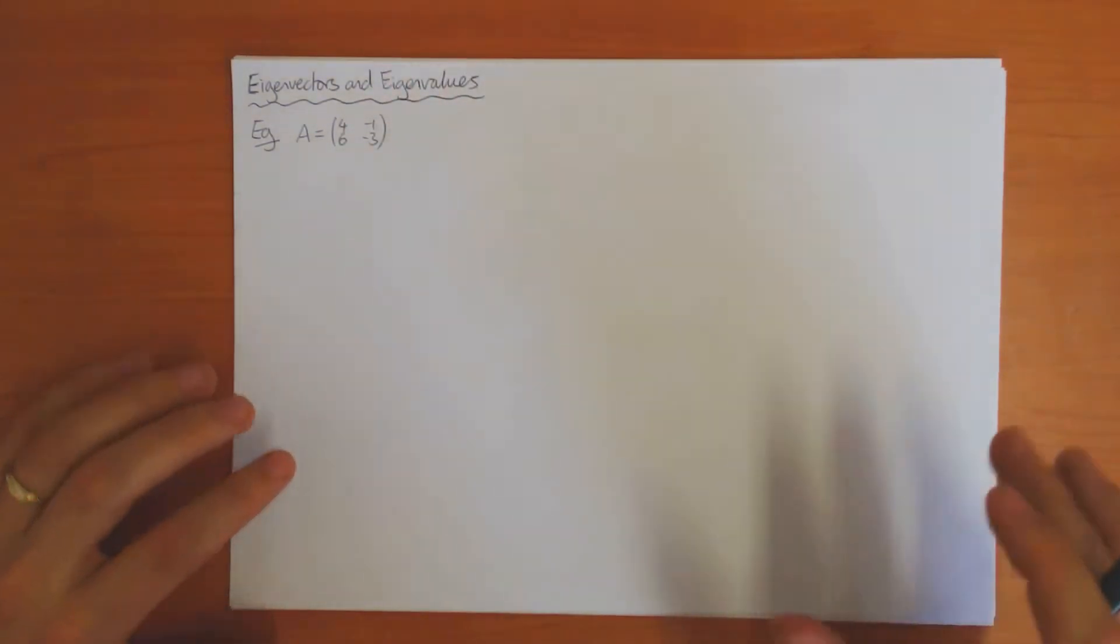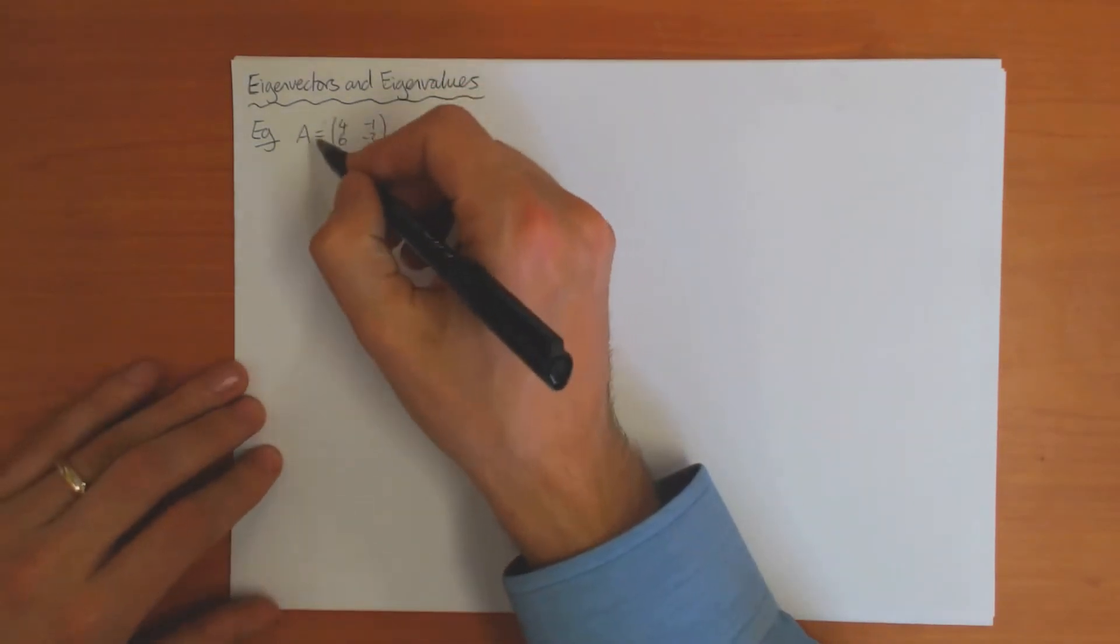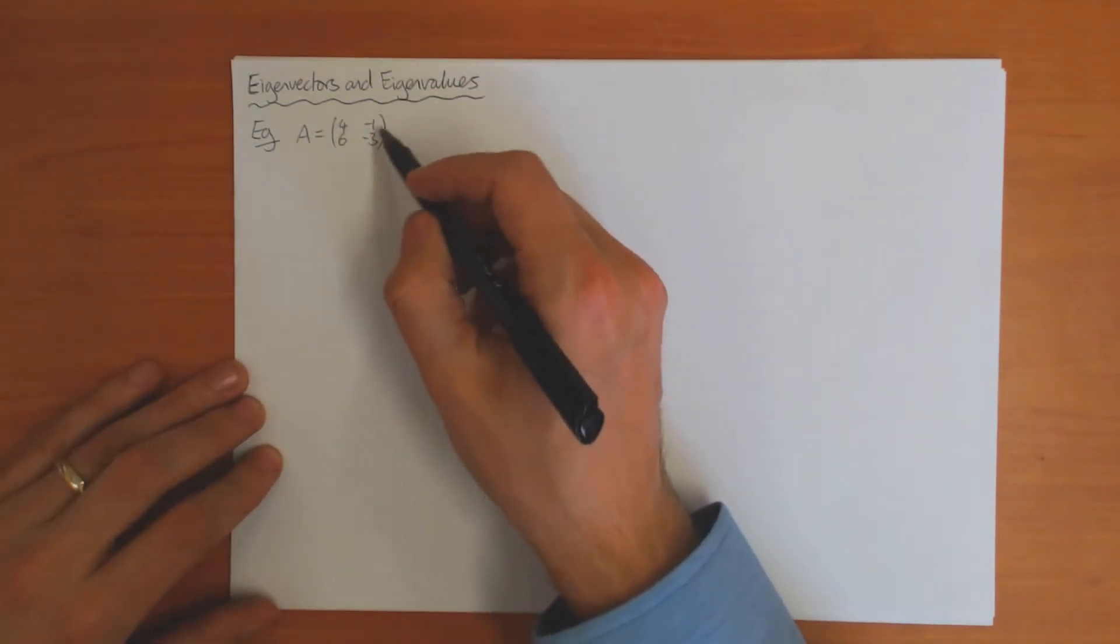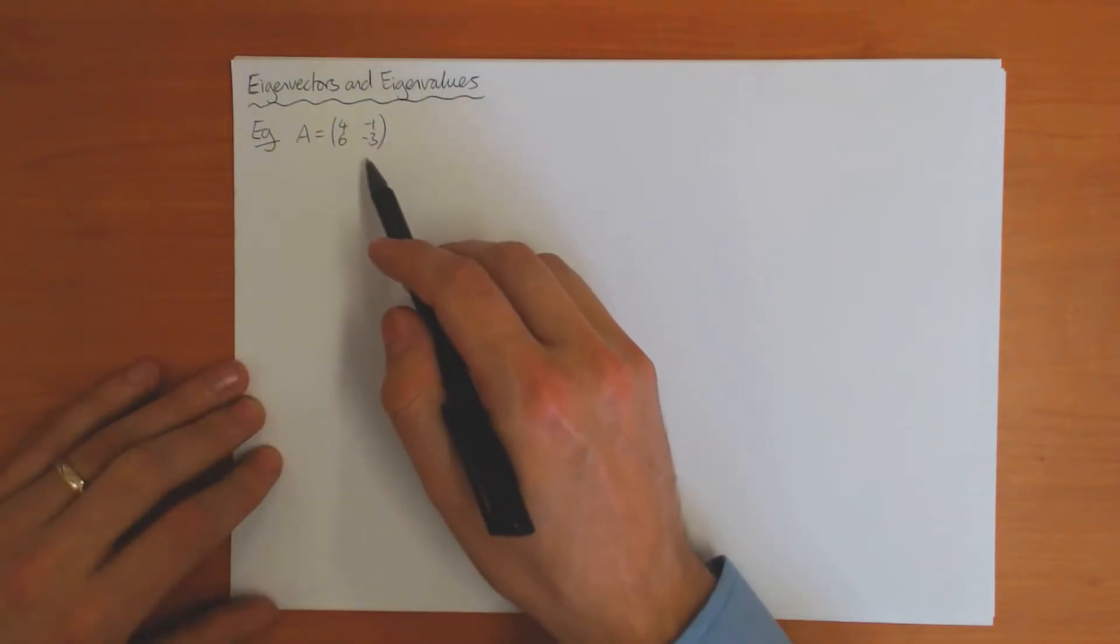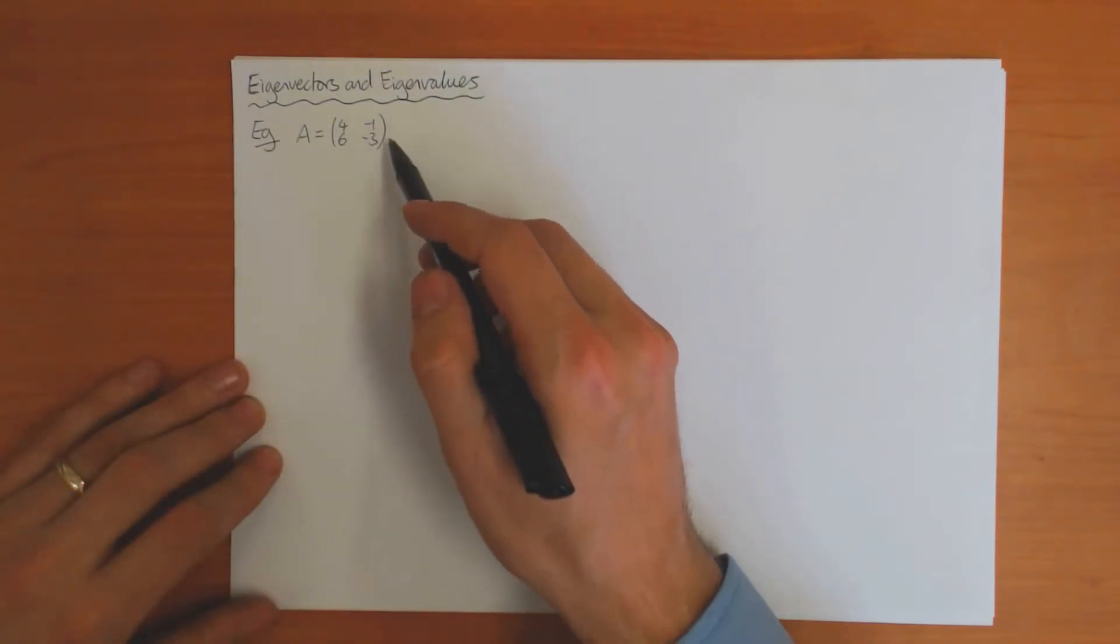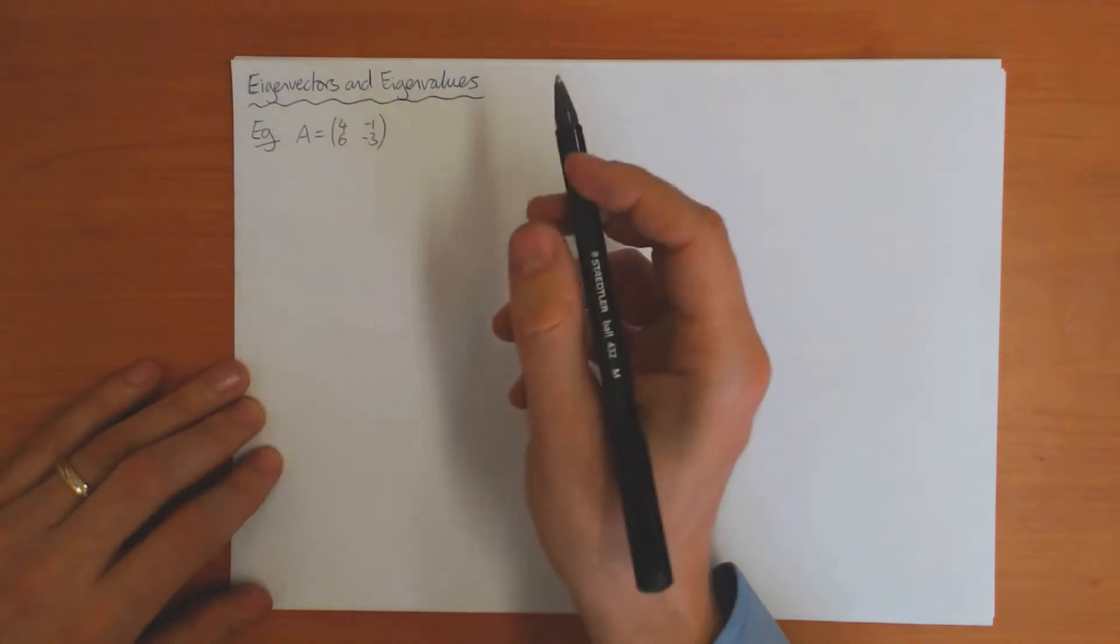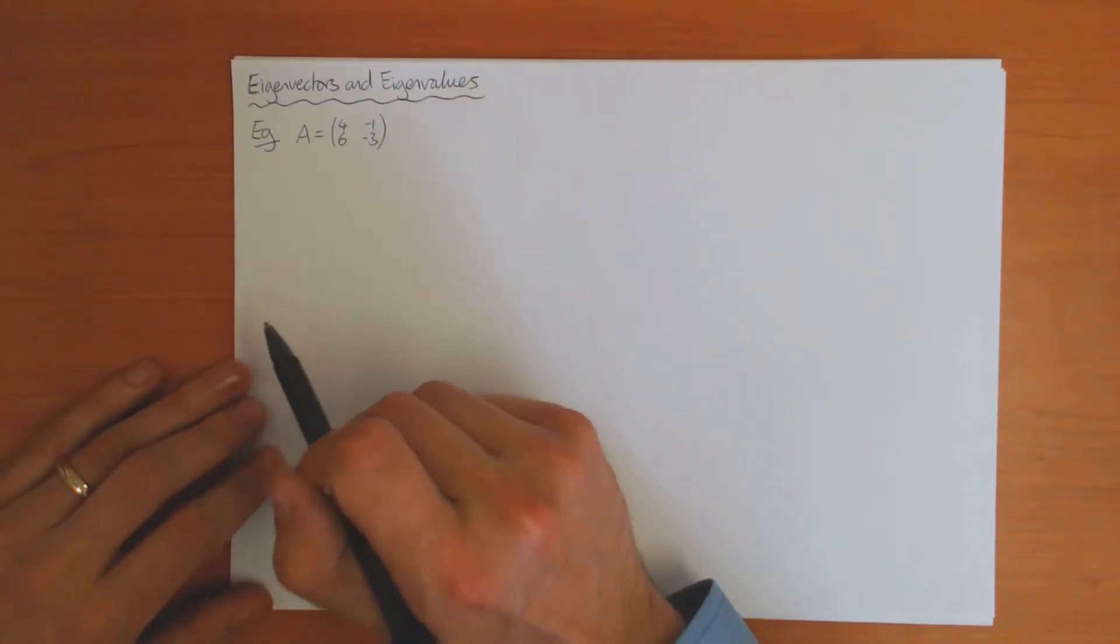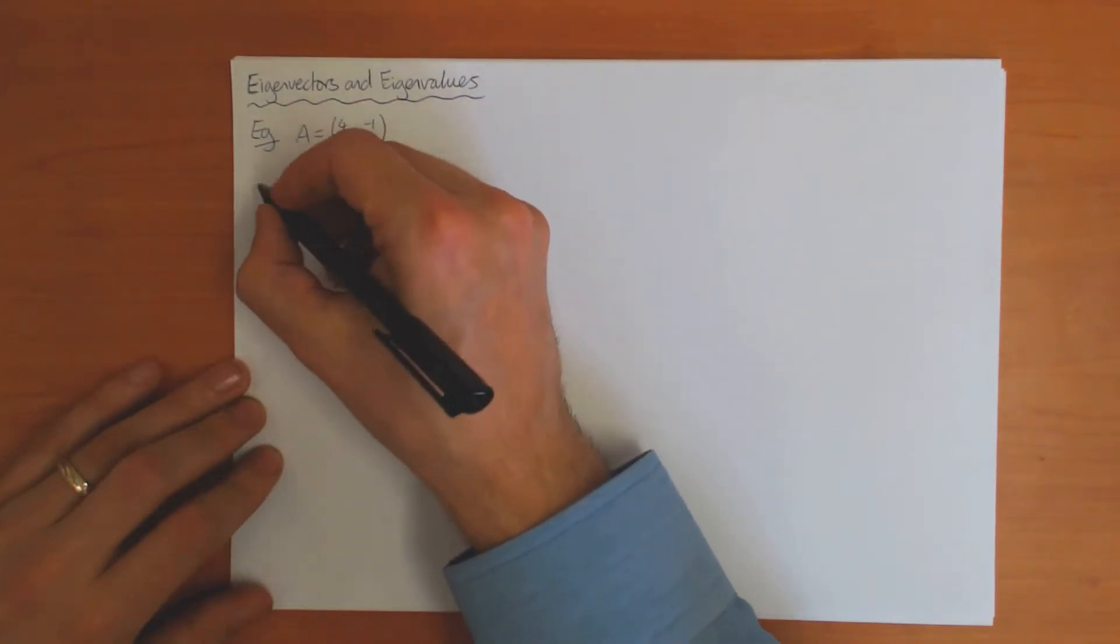The eigenvectors and eigenvalues are concepts related to a square matrix. Here I take a 2 by 2 matrix, so this defines some linear transformation in two dimensions—it takes a two-dimensional vector and gives me another two-dimensional vector. But some vectors transform in an interesting way under the transformation A.